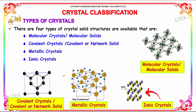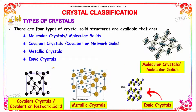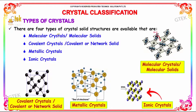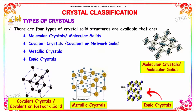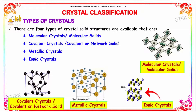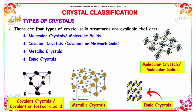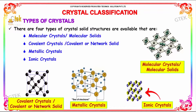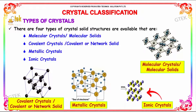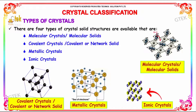Crystal classification. There are four types of crystal solid structures available: molecular structure, covalent crystals, metallic crystals, and finally ionic crystals.